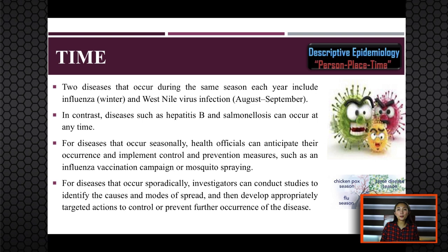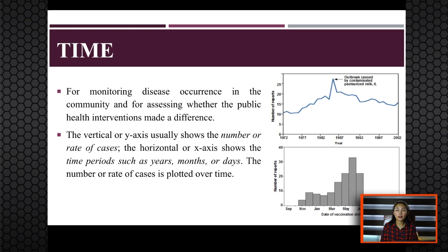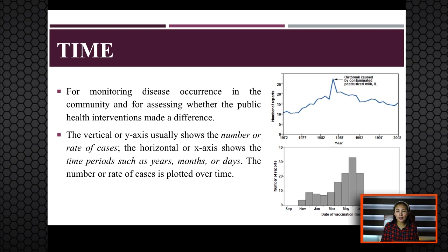Displaying patterns of disease occurrences by time is very important for monitoring disease occurrences in the community and for assessing whether public health interventions made a difference. Time data are usually displayed with a two-dimensional graph — usually a line graph or bar graph or histogram — where the y-axis shows the number of cases or rate of cases, and the x-axis shows the time period such as years, months, days, minutes, hours, or seconds.